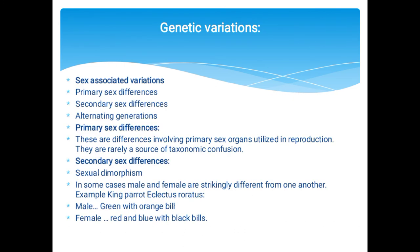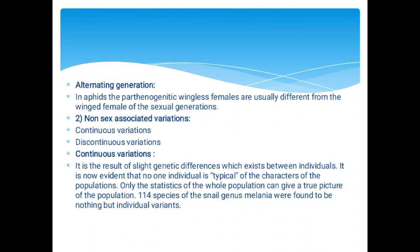Genetic variations include sex-associated variations: primary sex differences involving primary sex organs utilized in reproduction, secondary sex differences, and alternating generations. Males and females have different reproductive systems. Sexual dimorphism means an individual may have a single or double reproductive organ. In some cases, male and female are strikingly different — for example, the king parrot Alisterus scapularis: male is green with an orange bill, female is red and blue with a black bill. In alternating generations, in aphids, parthenogenetic wingless females differ from the sexual generation yet are products of the same species.